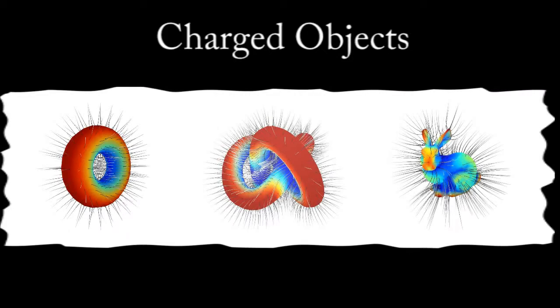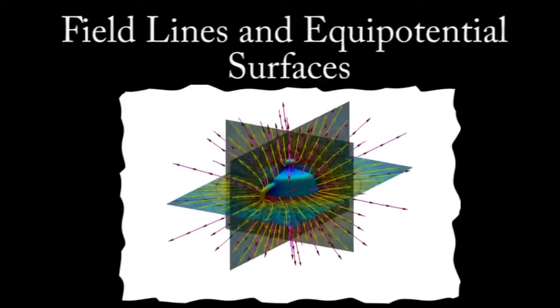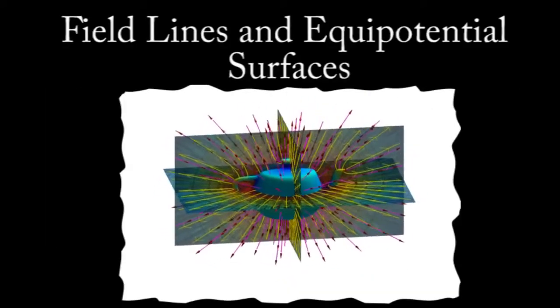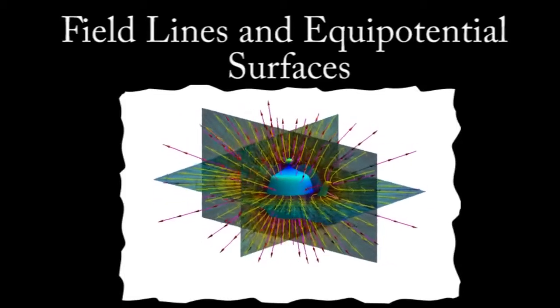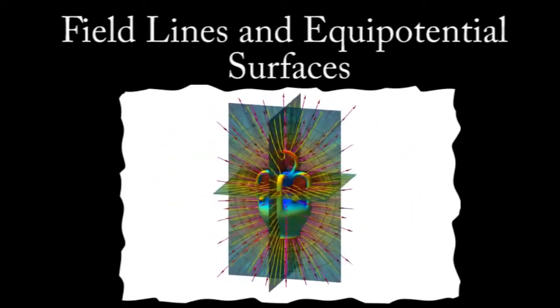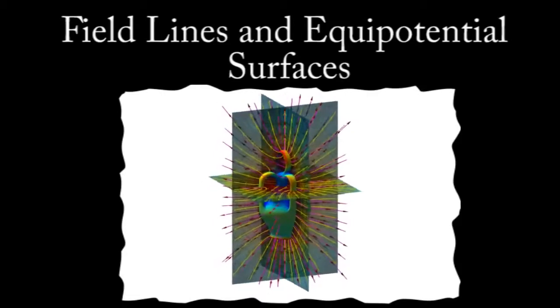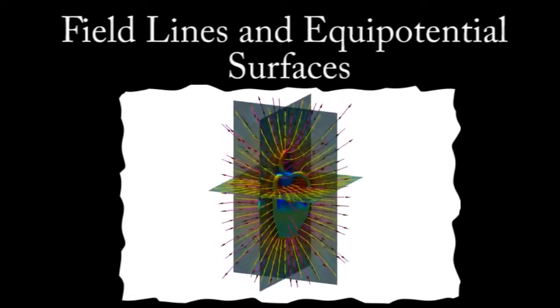We virtually charge the objects in the scene as conductors by running a charge simulation. Using the field lines and equipotential surfaces of the resulting electric field, we can define a body-centric coordinate system called electric coordinates, which parametrizes the outer space of the charged object in a way analogous to polar coordinates.